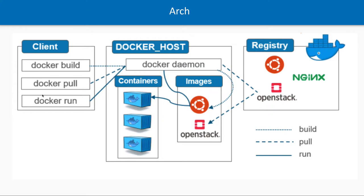When you do 'docker pull,' it goes to the Docker host, talks to the Docker daemon, checks locally whether the Redis image is available — if not, it fetches it from the registry. Now you have the Redis image locally on your system. When you then do 'docker run,' the daemon sees that the image is available and creates a container instance for that image.